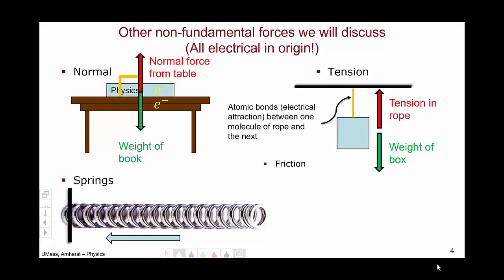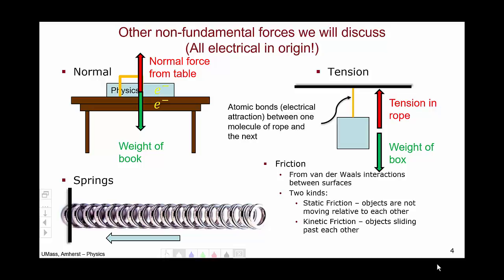The final set of non-fundamental forces we will discuss are frictional forces. These are the forces that come when you have rough surfaces in contact, and are fundamentally electrical, and arise from van der Waals interactions and hydrogen bonds between surfaces. There are actually two different kinds of friction. One is static friction, which happens when objects are not moving relative to each other. And then there is kinetic friction, which occurs when objects are sliding past each other. The directions of frictional forces can sometimes be somewhat tricky, and we'll have a lab in class to directly deal with them.